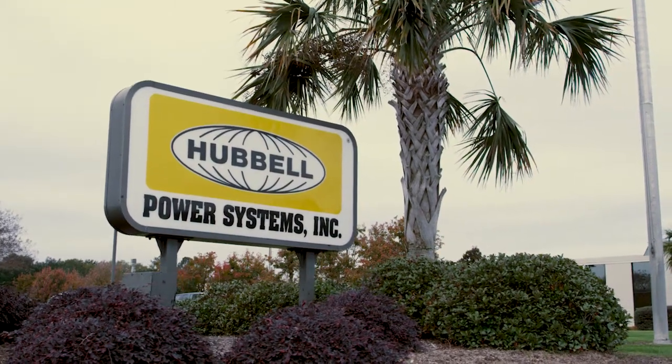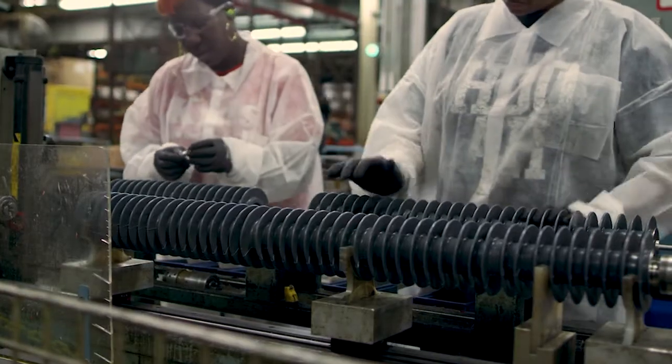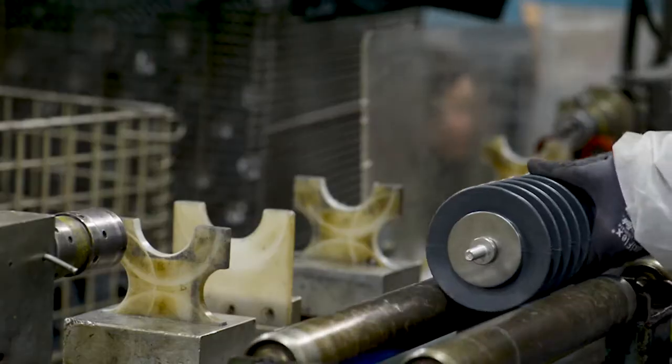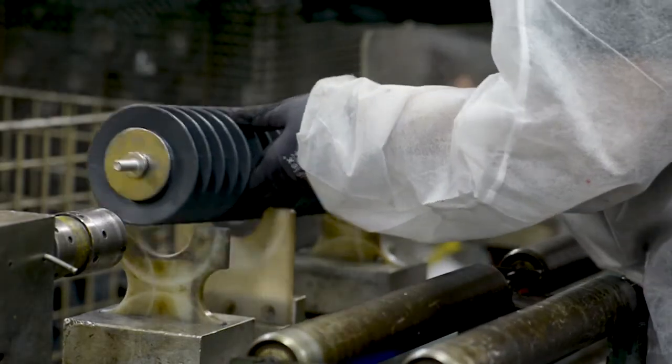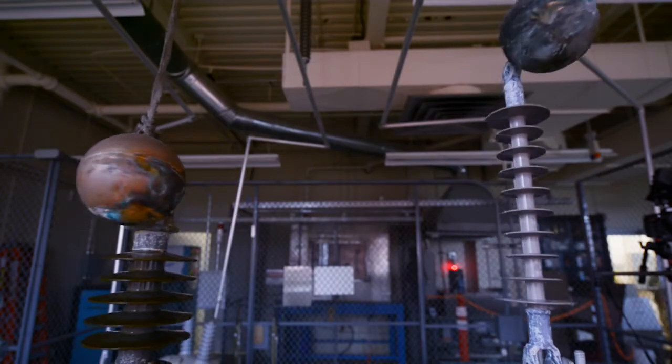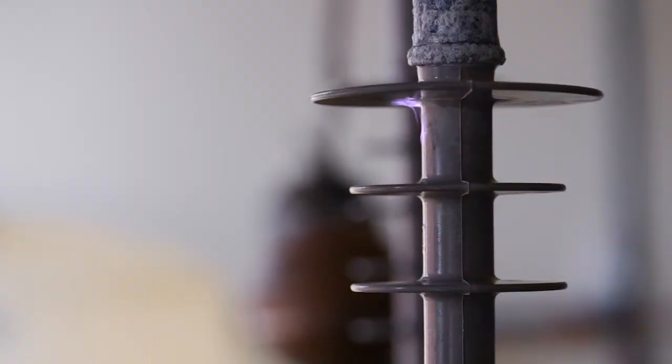Hubble Power Systems has been manufacturing high-voltage surge arrestors for over 70 years. Surge arrestors protect power utility equipment from damage by high-voltage sources such as lightning strikes.